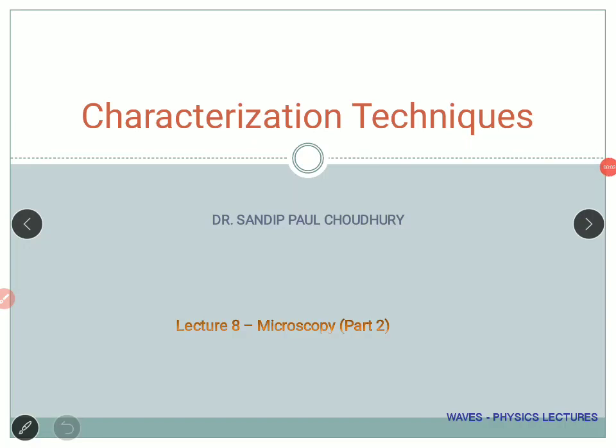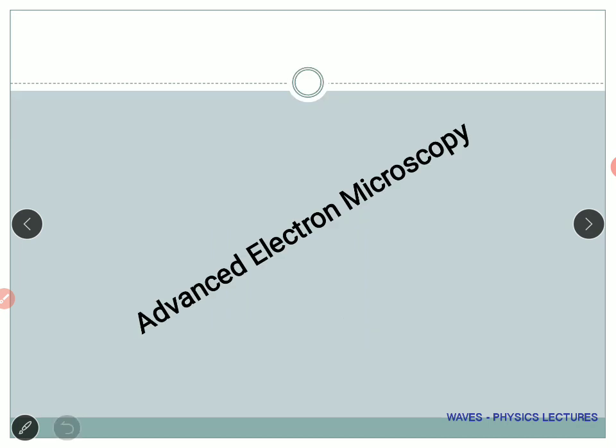We are going to continue with characterization techniques. Today, since we started with microscopy we have not yet completed the topic — it's quite a long topic. Initially I prefer to tell you the basics of microscopy so that we can go for scanning electron and tunneling electron microscopy. Today we will look into some advanced electron microscopy systems, just having an overview rather than going into specific details.